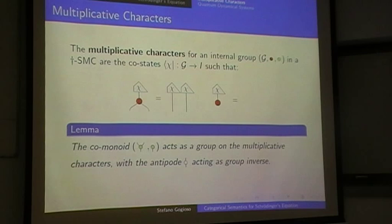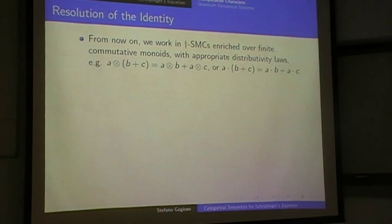I said I would need some notion of superposition. I'll not go into the details of how you get one — I'll just assume that my symmetric monoidal categories are enriched over finite commutative monoids, not groups. I don't need groups. And they have an appropriate distributive law. This is fairly standard.